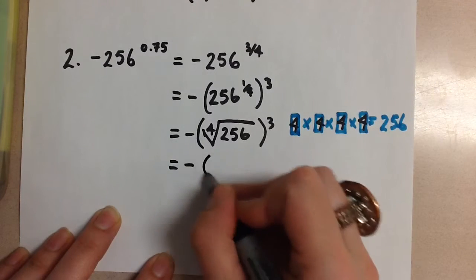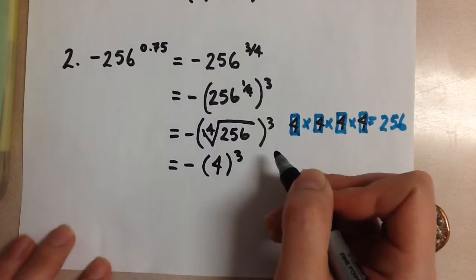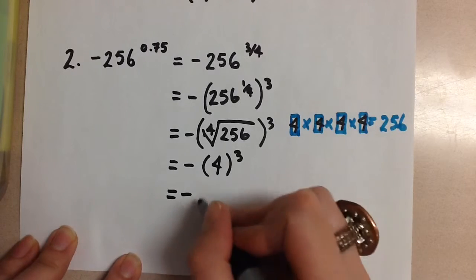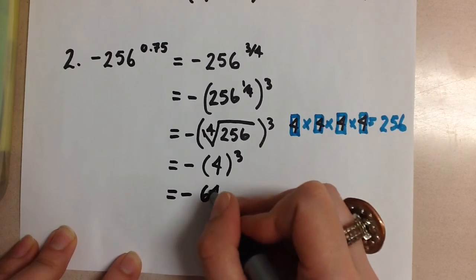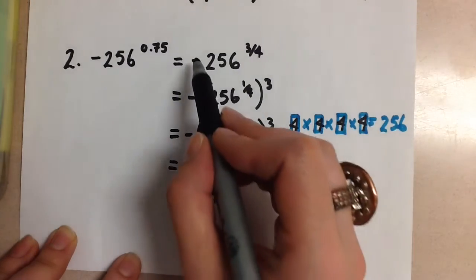So here we're going to have 4 to the power of 3. 4 to the power of 3 is 64, and we still have that negative attached to the number that carried through all the way to the end, giving us negative 64.